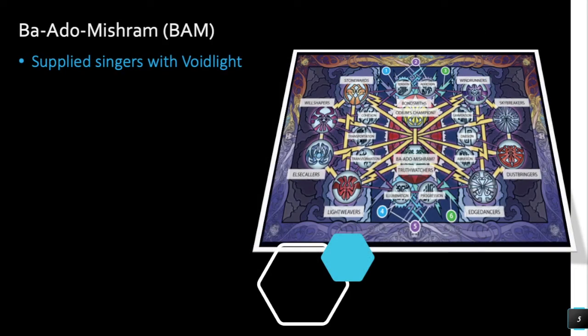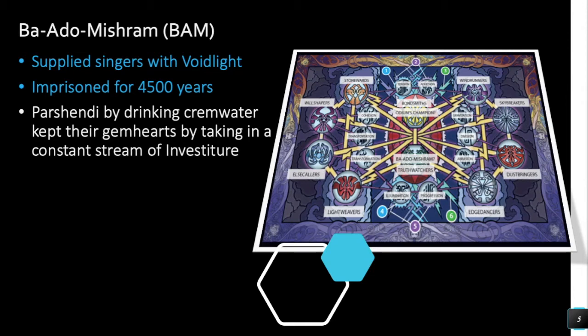To further answer why they may have adapted and evolved, let's talk about BAM — Ba-Ado-Mishram — the unmade spren who supplied singers with Voidlight. She would give singers all the Voidlight they needed and was imprisoned for 4,500 years. During this time, the Parshendi would have been drinking the natural Stormwater that occurs on Roshar, getting investiture from the cremwater. However, Parshmen would not have been drinking cremwater, most likely, because they were slaves to humans.